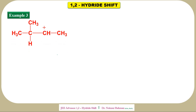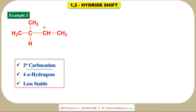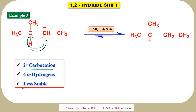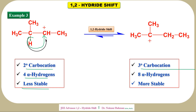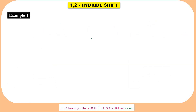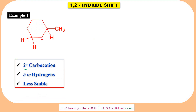Similarly, here we have a secondary carbocation with four alpha hydrogens — it is less stable. Hydride shift will take place. Always try to do the hydride shift from the carbon where there is a possibility of making a more stable carbocation. This hydride is shifted to give a tertiary carbocation, which now has eight alpha hydrogens and greater stability. More alpha hydrogens means more stability, due to hyperconjugation.